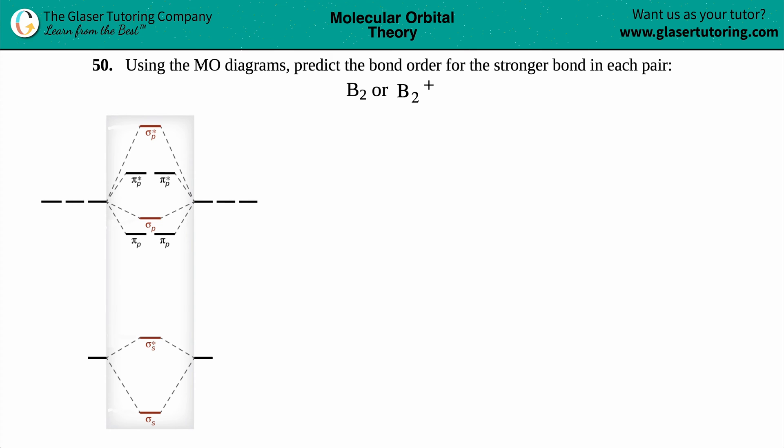Number 50: Using the molecular orbital diagrams, predict the bond order for the stronger bond in each pair. We have B2 or B2+. Always start off with your neutral molecule first just to see what's going on, and then work with your charged ions.